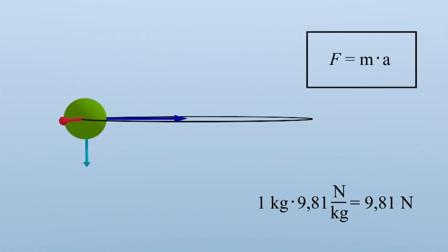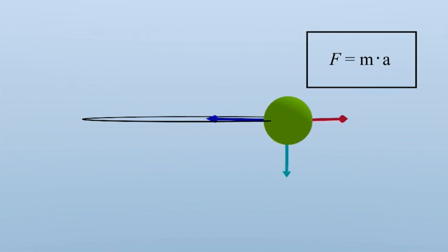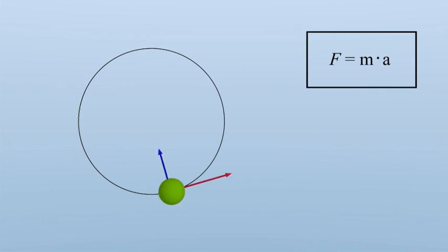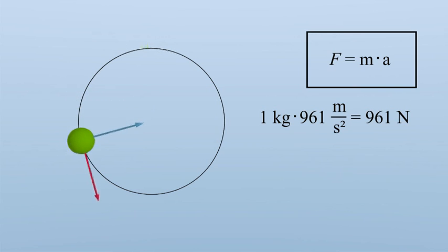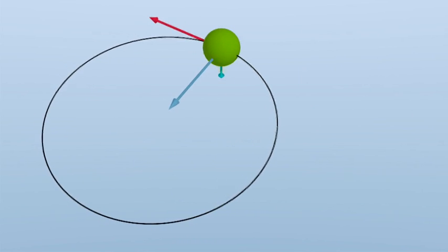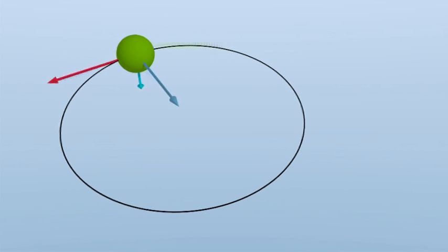Since the radial acceleration of our object is 961 meters per second squared, the amount of the centripetal force is 961 Newtons. To compensate for the weight of the object pointing downwards now, we need to introduce a third force.